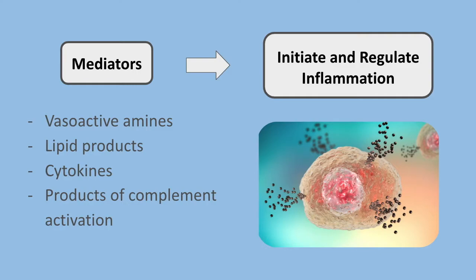These mediators are either secreted by cells or generated from plasma proteins. The cell-derived mediators are normally held within intracellular granules, which means they can be very rapidly secreted — histamine is an example of this. Or they will be synthesized de novo, meaning made from scratch in response to a stimulus, which takes a little longer. These include prostaglandins, leukotrienes, and cytokines.